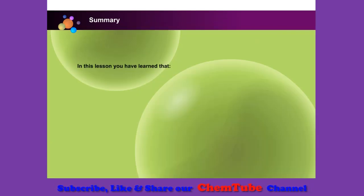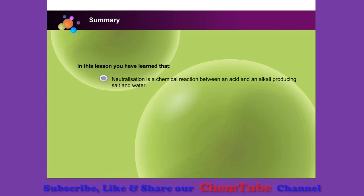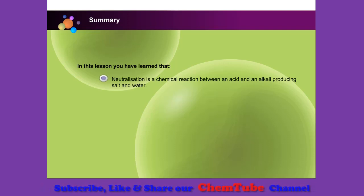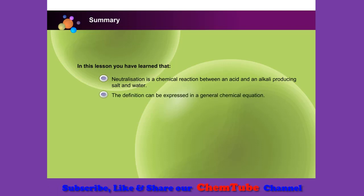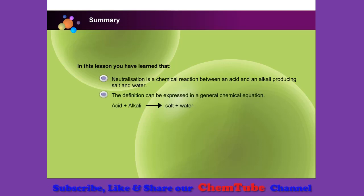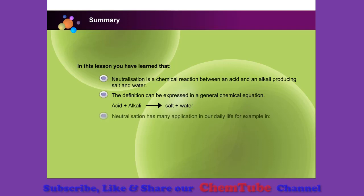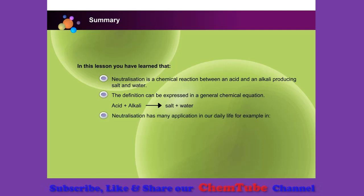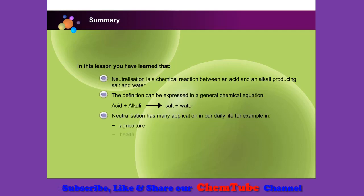In this lesson, you have learned that neutralisation is a chemical reaction between an acid and an alkali producing salt and water. The definition can be expressed in a general chemical equation. Neutralisation has many applications in our daily life, for example in agriculture, health, and manufacturing industries.